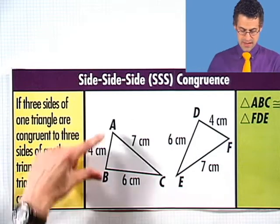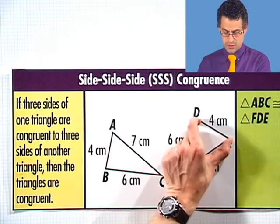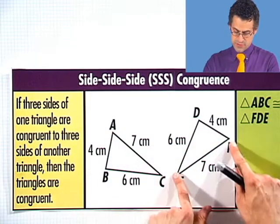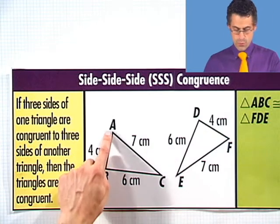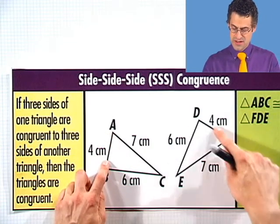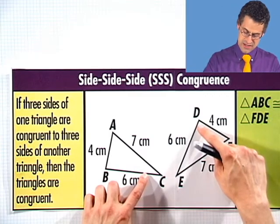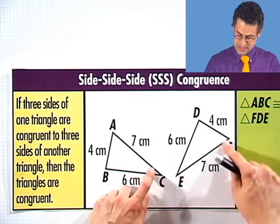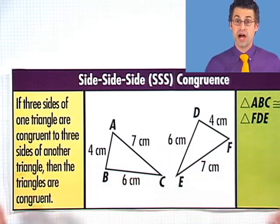If you look at this picture, you'll see that the length of this side is 4 centimeters, as is this one. This is 7, as is this one. This is 6, as is this one. So since one side is congruent to the other corresponding side, and all the sides are congruent, then the triangles are congruent.